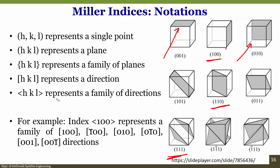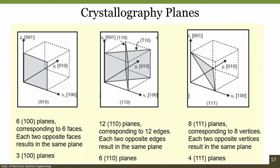There are 6 {100} planes corresponding to 6 faces, 12 {110} planes corresponding to 12 edges, and 8 {111} planes corresponding to 8 vertices — each two opposite vertices result in the same plane. It is important to understand crystallographic planes. For our purposes, we will focus on what kind of wafer we can use to fabricate different devices rather than stretching further into how these planes are mathematically used.